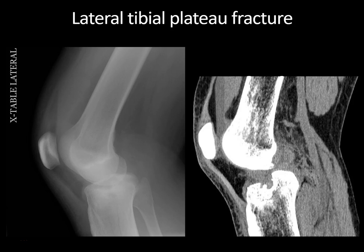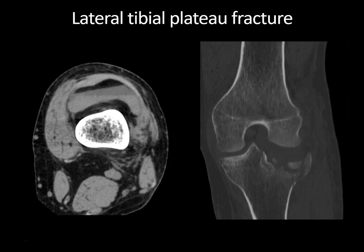CT and MRI have much higher sensitivity to detect lipohemarthrosis. On the axial CT image, the fat floats to the surface — least dense and most anterior. Then there's a hematocrit effect: blood separates into serum in the middle layer, and red blood cells, which are heaviest, settle in the most dependent aspect. It kind of looks like Neapolitan ice cream. Importantly, many tibial plateau fractures do not have visible lipohemarthrosis — they might just have hemarthrosis without fat. So the absence of this finding doesn't rule out an intra-articular fracture.